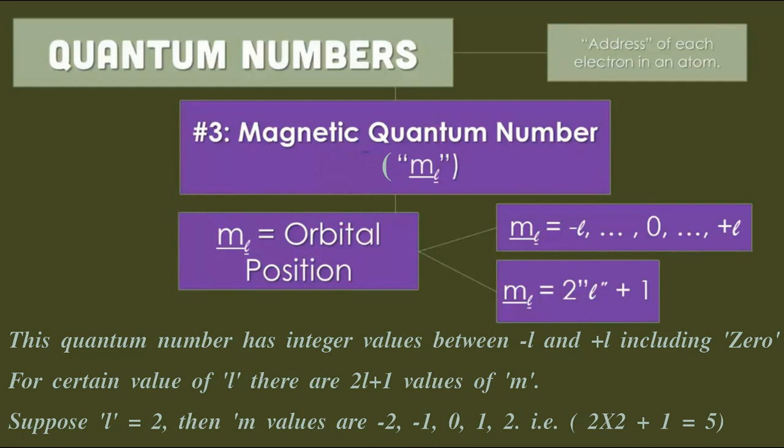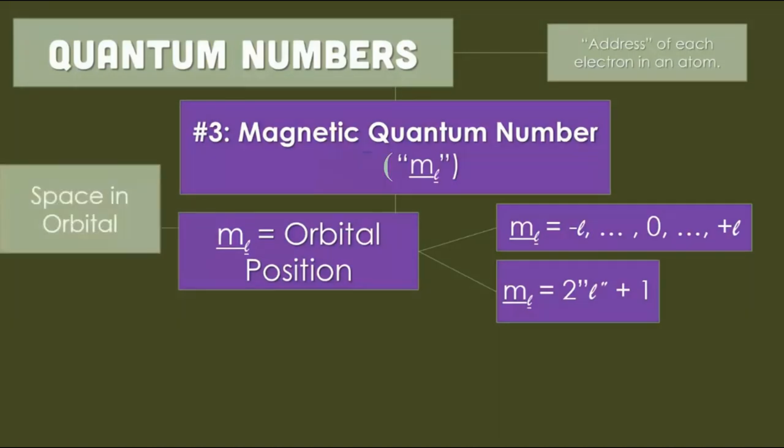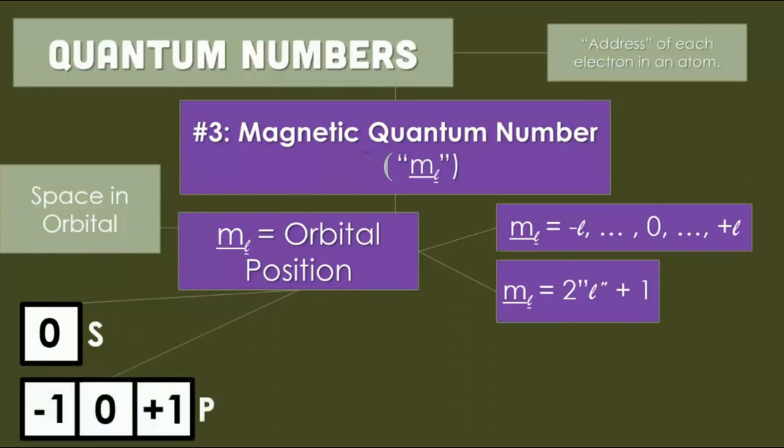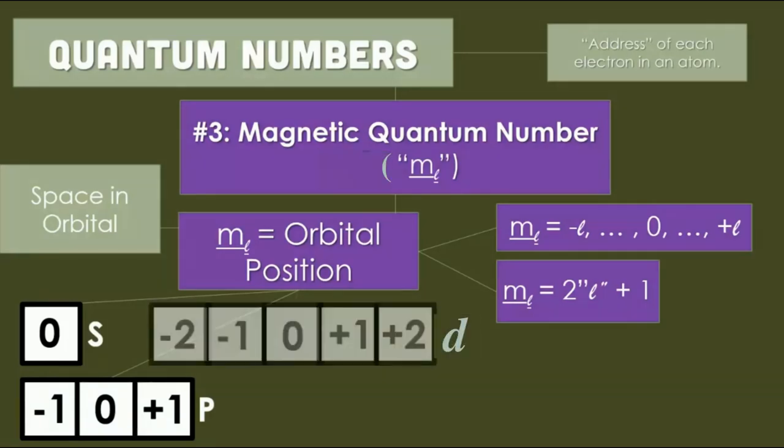So the values are minus 2 to plus 2. And look here, s orbital is having only one m value. For p there are 3 values: minus 1, 0, and plus 1. For d there are 5 values: minus 2 to plus 2.